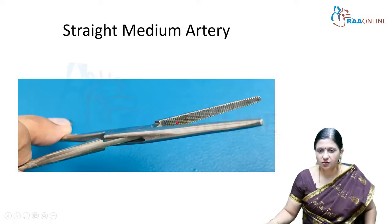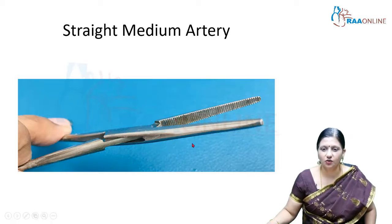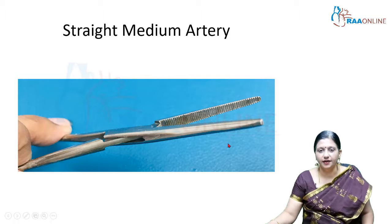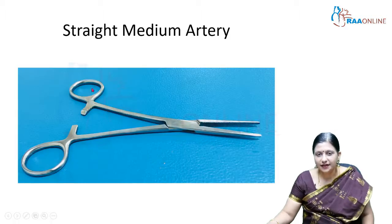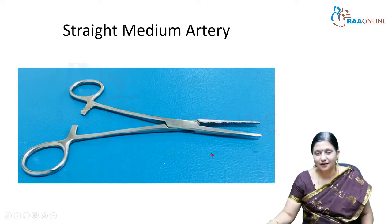This is a straight artery forceps. It also has linear serrations and is medium in size. Other variants include the small artery and the long artery — the small one is also called a mosquito. The straight artery is used for holding the peritoneum while closing the abdomen. It has the same latch, clamp, and crush mechanism.